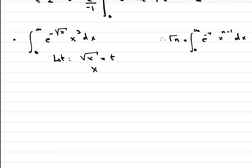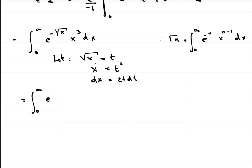If we square both sides, x equals t squared, and differentiating gives dx equals 2t dt. Substituting into the integral: from 0 to infinity, e raised to minus t (since square root of x equals t), times x raised to 3 which becomes t squared raised to 3, times 2t dt. This simplifies to 2 times the integral from 0 to infinity of e raised to minus t, times t raised to 6, times t dt.